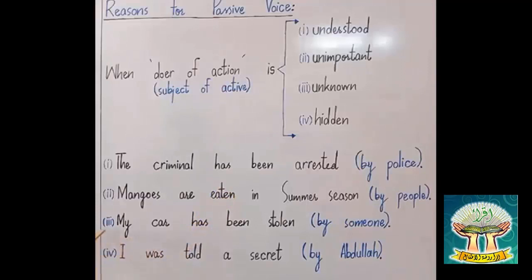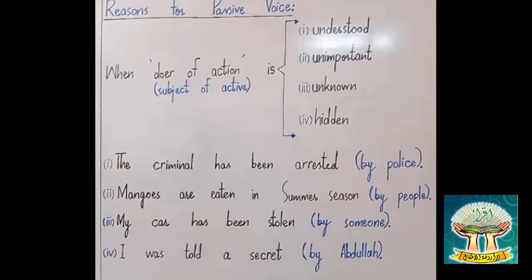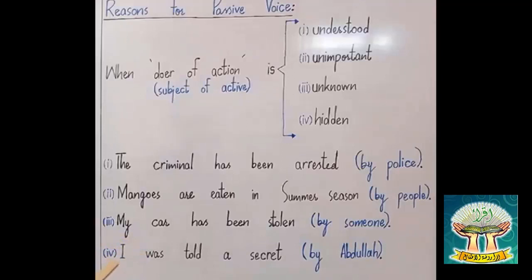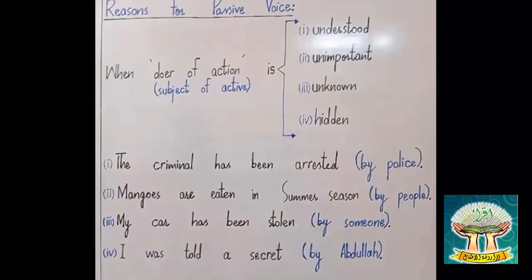Example number three: 'My car has been stolen by someone.' Here 'someone' is unknown — we don't know who has stolen the car. Saying in active voice 'Someone has stolen my car' doesn't sound suitable; it is more suitable to say 'My car has been stolen.' Example number four: 'I was told a secret by Abdullah.' When the speaker wants to hide the doer from the listener, he uses passive voice — 'I was told a secret' — so the listener doesn't know who told the secret.